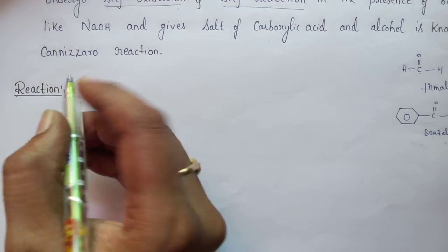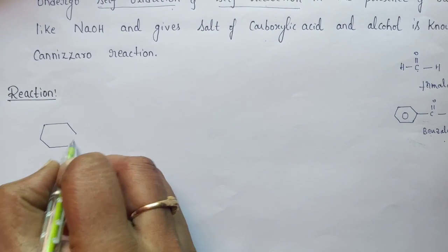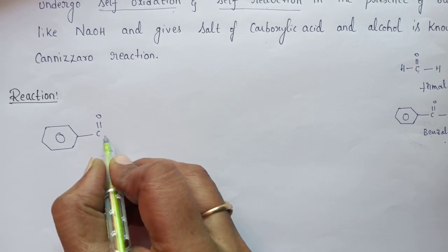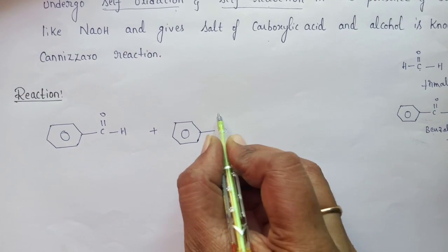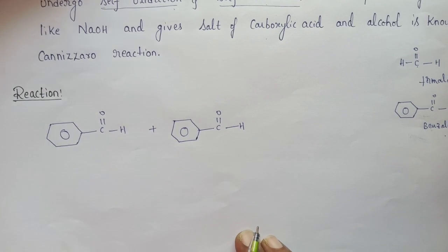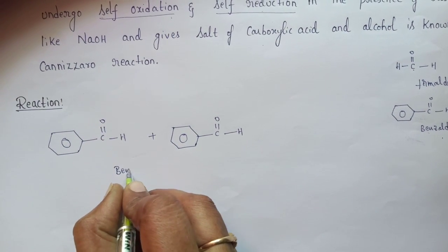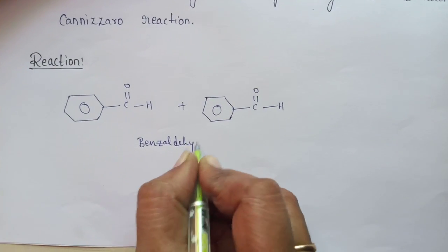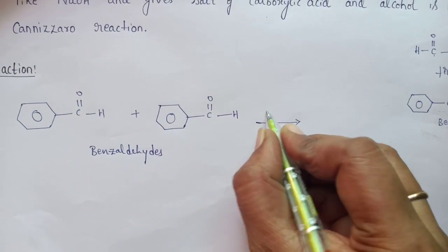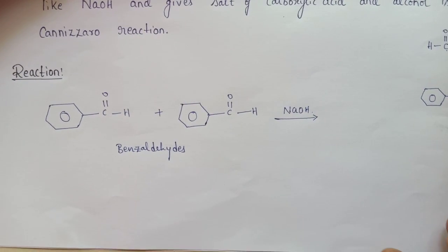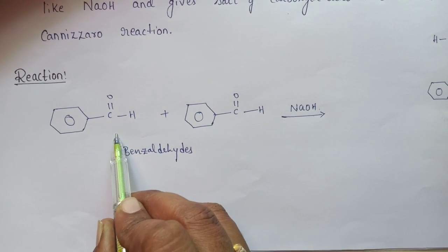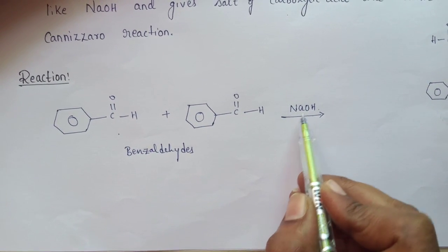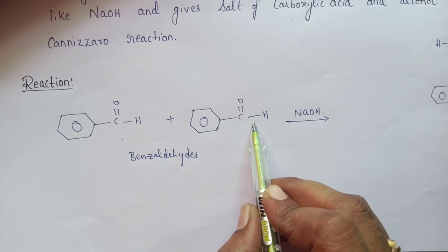Coming to the reaction — let us consider the example of benzaldehyde. Take two molecules of benzaldehyde. This is the structure of benzaldehyde, which does not possess any alpha hydrogens. These two molecules of benzaldehyde react together in the presence of NaOH. This is not an addition or condensation reaction. One molecule of benzaldehyde undergoes oxidation and another molecule of benzaldehyde undergoes reduction.